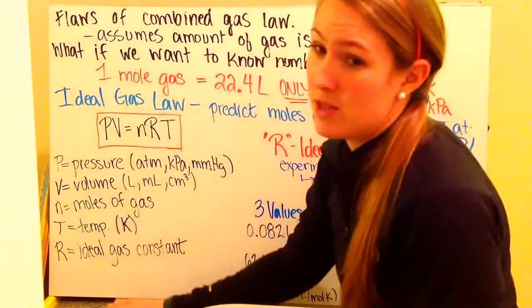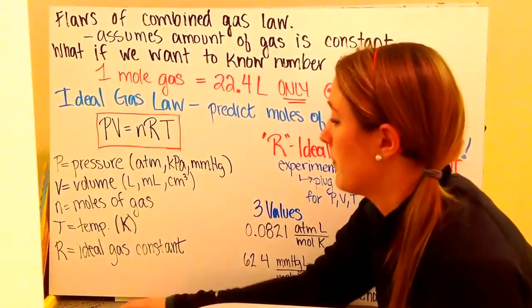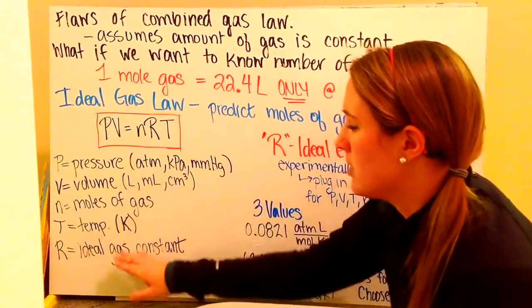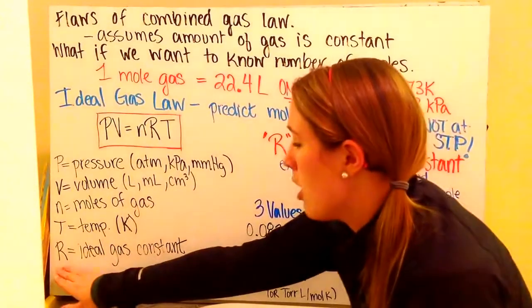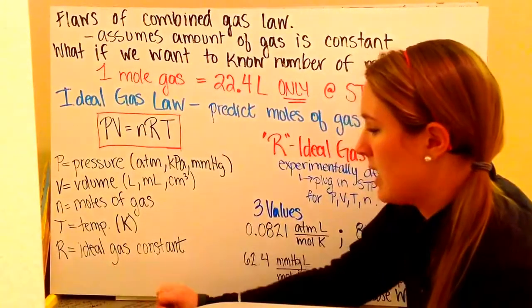N is your moles of gas. Remember, you can find moles of gas from grams using the molar mass. T is your temperature, must be told in Kelvin, thanks to the kinetic molecular theory. And R is going to be our ideal gas constant.